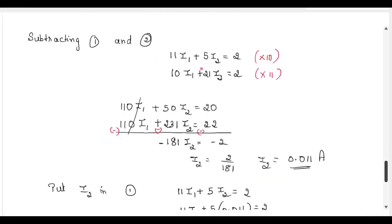To solve equations 1 and 2, we multiply equation 1 by 10 and equation 2 by 11, giving 110I1 plus 50I2 equals 20 and 110I1 plus 231I2 equals 22. Subtracting, the I1 terms cancel. We get minus 181 I2 equals minus 2, so I2 equals 2/181, or approximately 0.011 amperes.